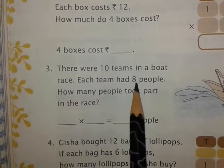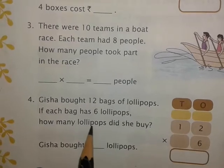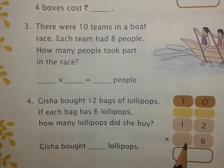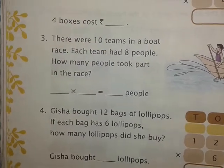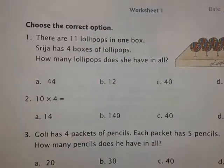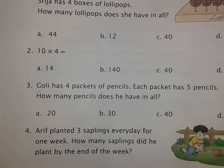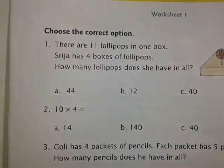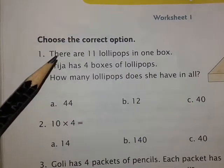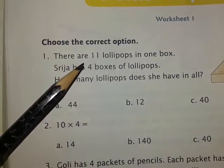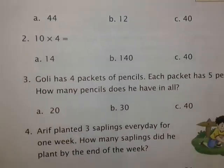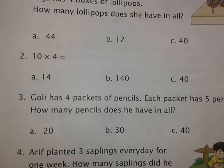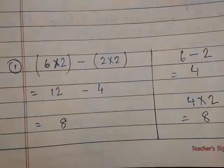For number three, as I have told you, you will need the table of eight. For number four also, you can multiply it and find the answer. After you do this one, we will move to worksheet one in our workbook. For number one in the worksheet, same way — if you have not memorized the table of eleven, you can write it out, do the rough work, and find out the answer.